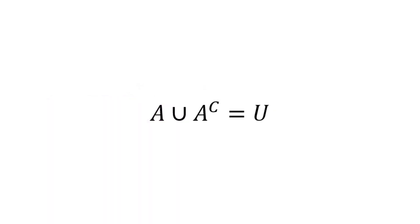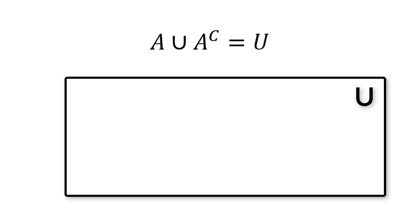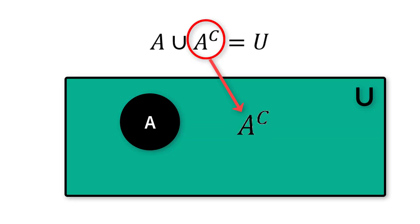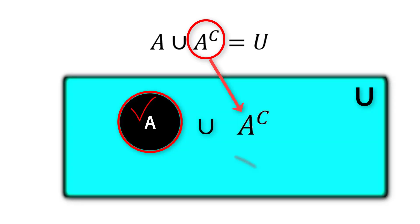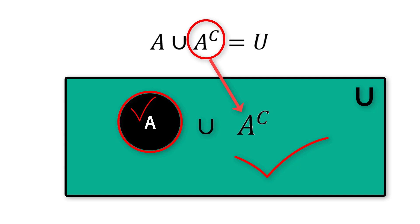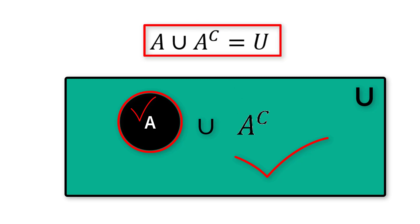The first property is A union A complement is equal to the universal set. This is the universal set, and A is obviously a subset of it, so A will be inside the universal set. The A complement is everything except A. That means A union A complement includes both sections, which is nothing but the universal set. This is why A union A complement equals the universal set.